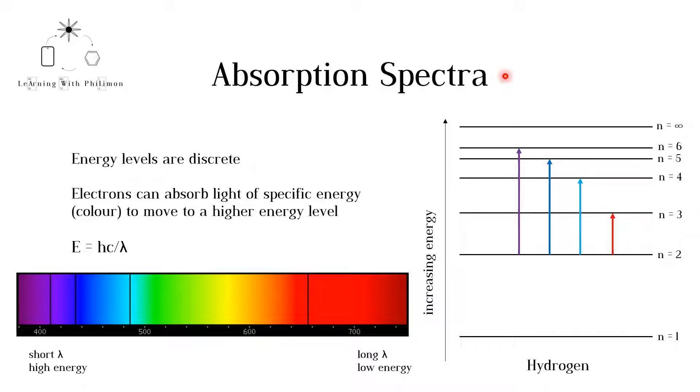In previous videos we have seen that electrons occupy orbitals in different principal energy levels. In this video we will be focusing only on the energy levels, not the orbitals.